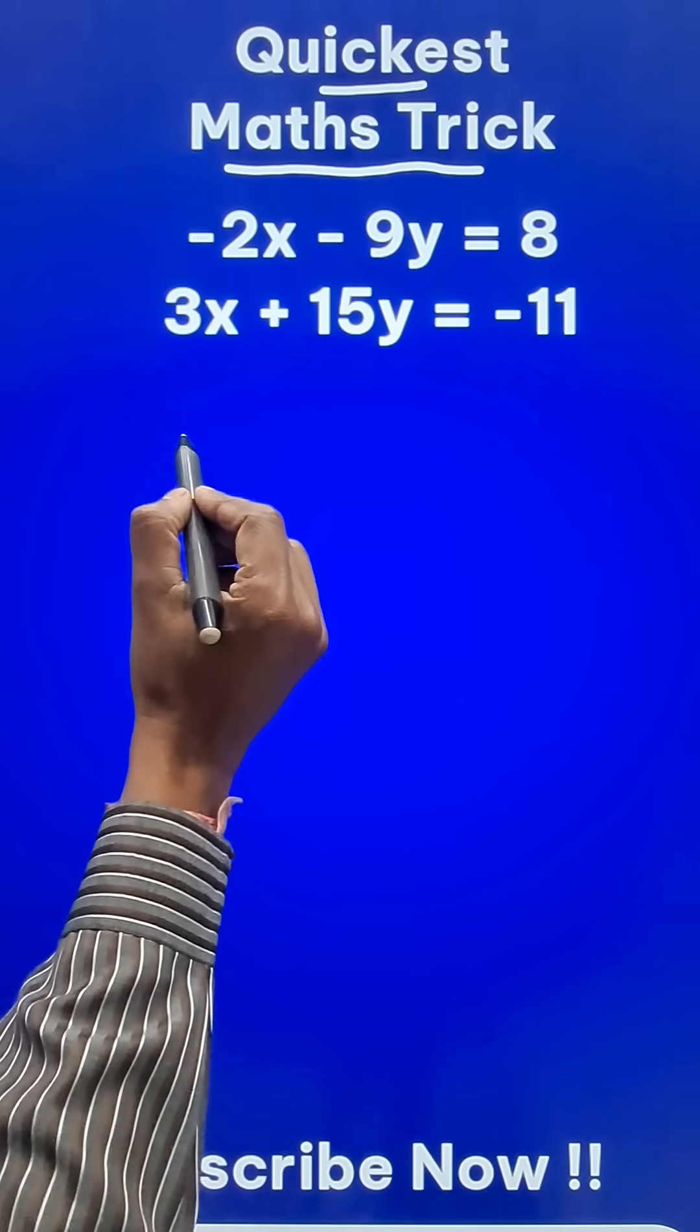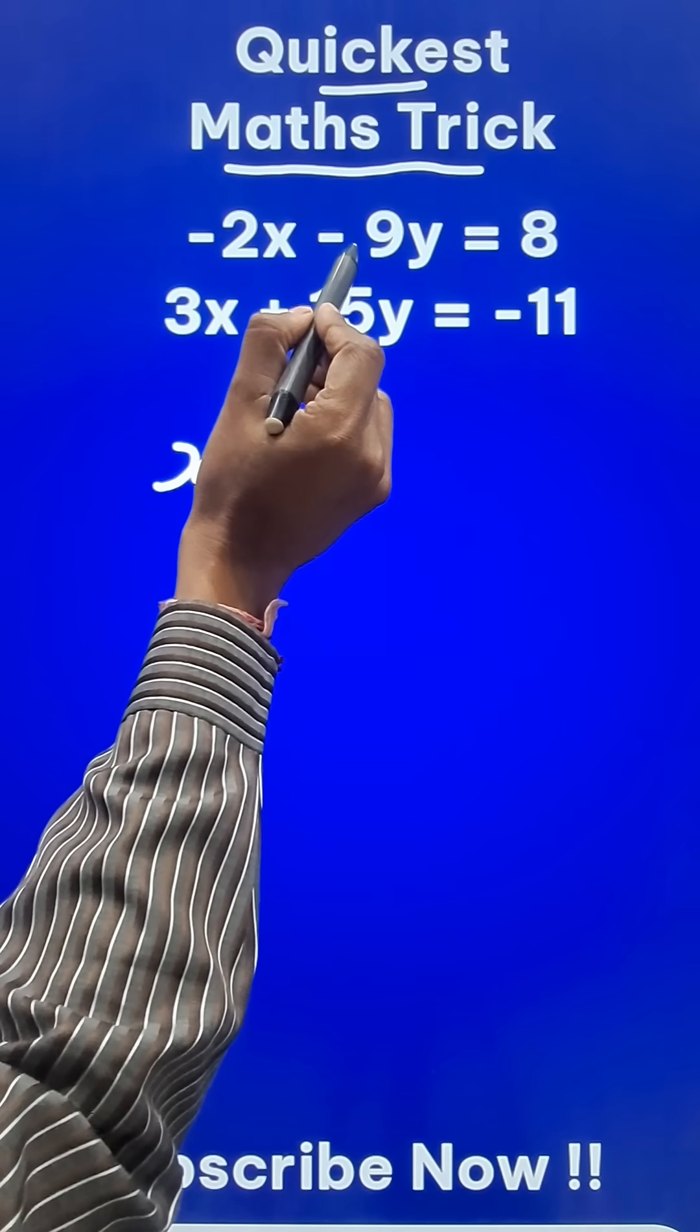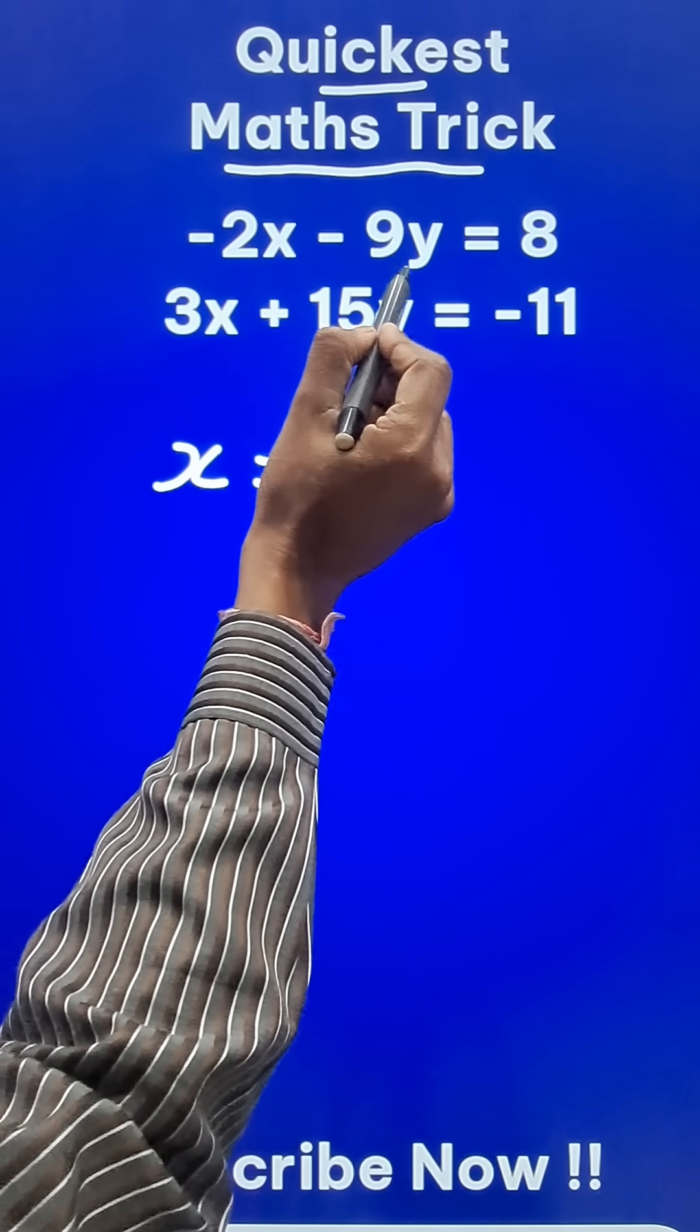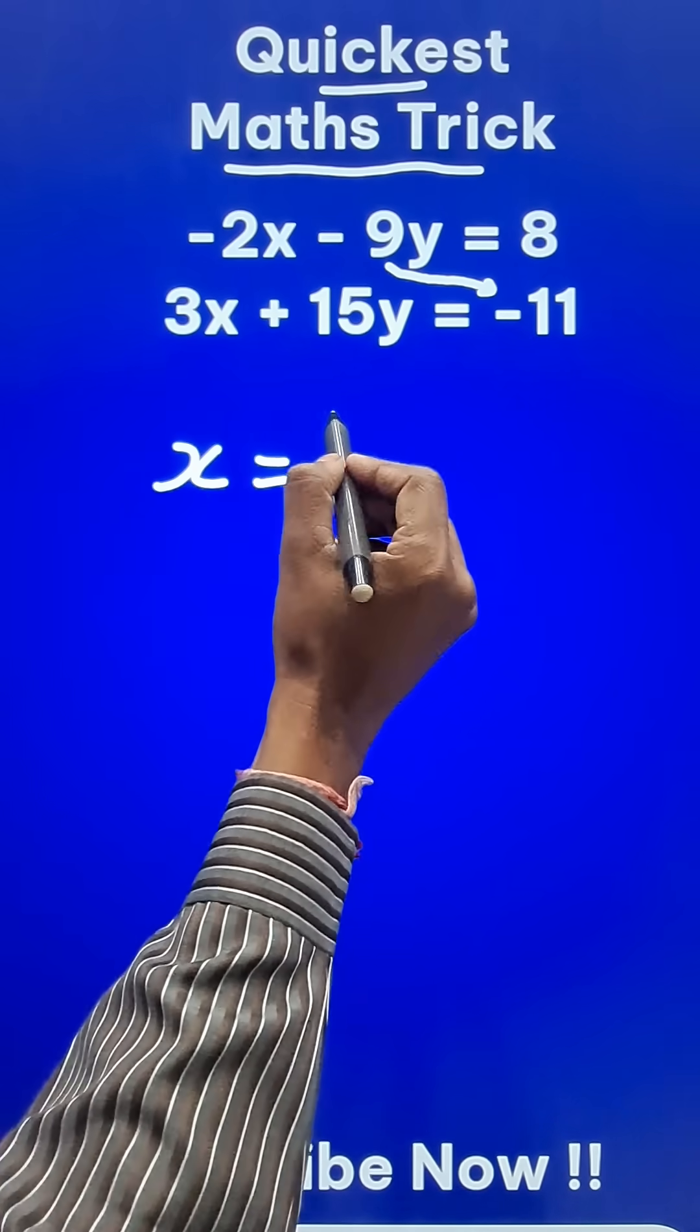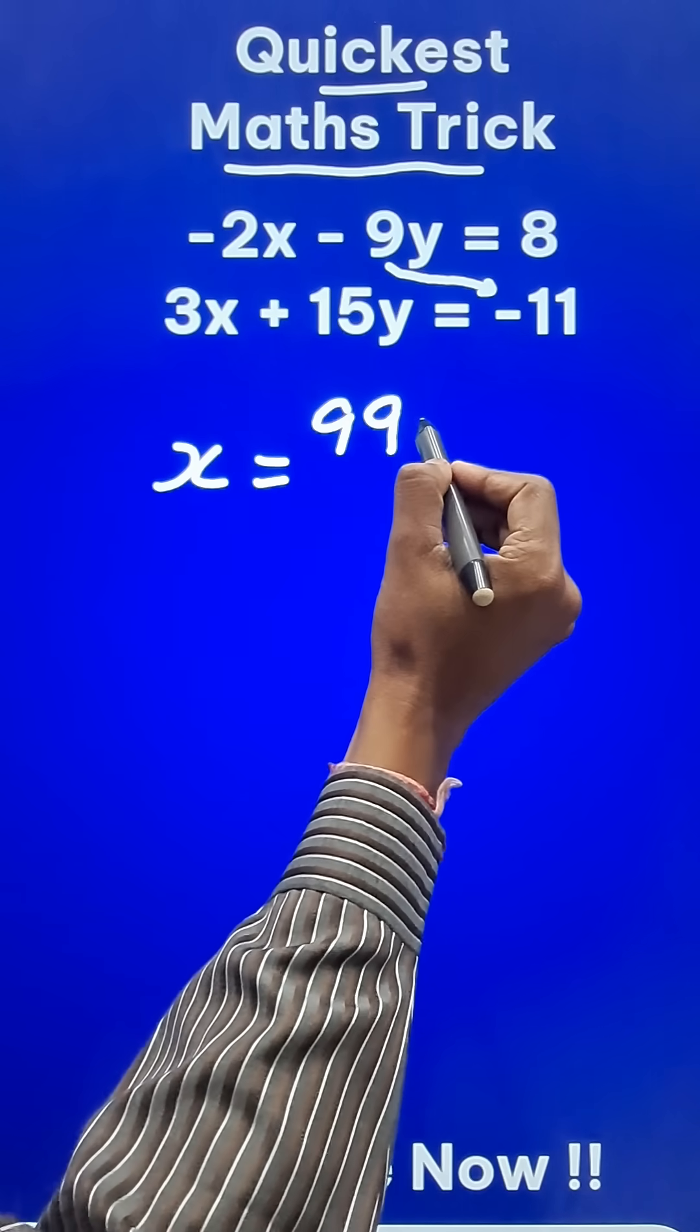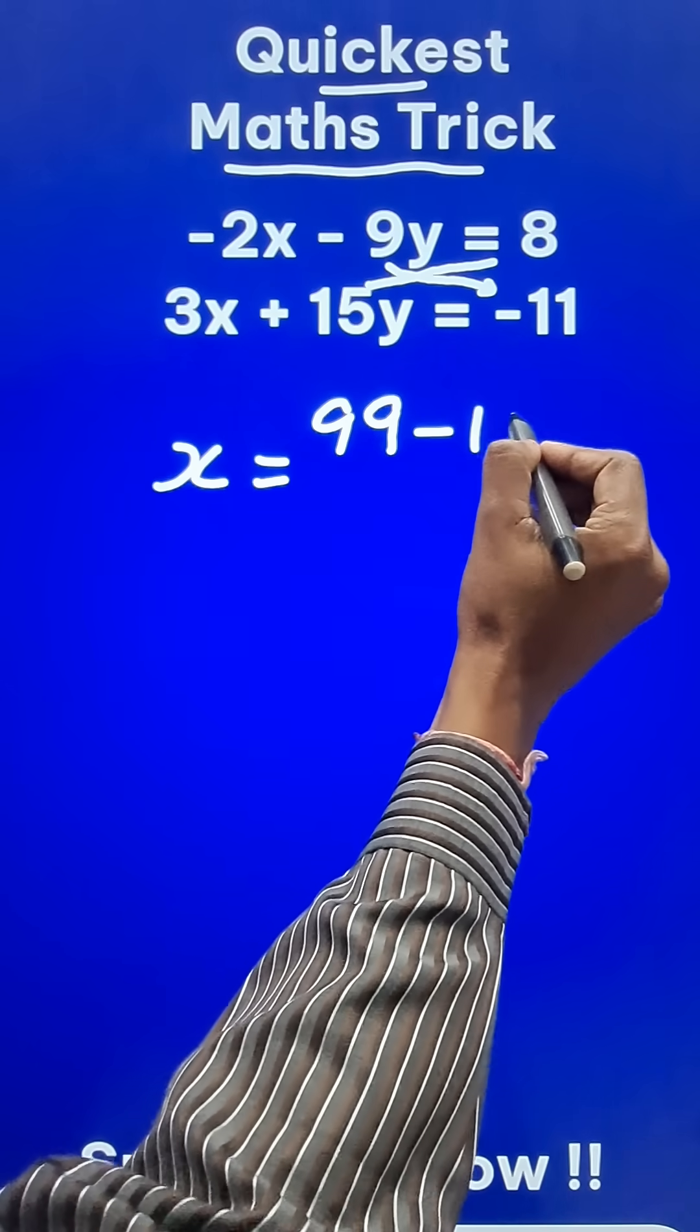So if you want to find the variable x, you just have to do minus 9, the coefficient of y here, multiplied by the constant term here. This will give you minus 9 times minus 11 as 99. Now put a minus sign and go the other way round. 8 times 15 is 120.